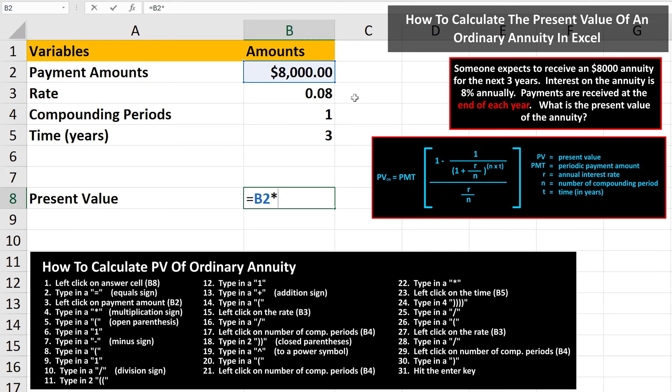From here, we type in a multiplication sign, which is shift 8 on the keyboard. Next, we type in an open parenthesis, and then we type in a 1. From here, we type in a minus sign, then another open parenthesis. Next, we type in a 1. Then we type in a division sign, which is a forward slash in Excel.